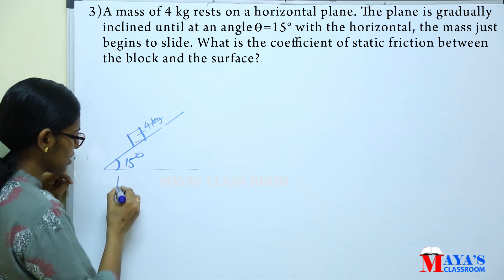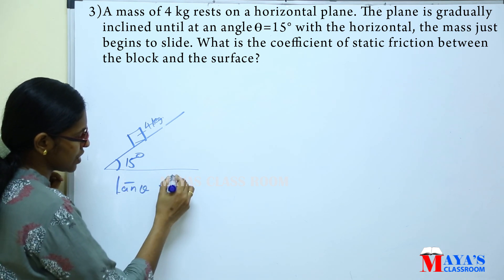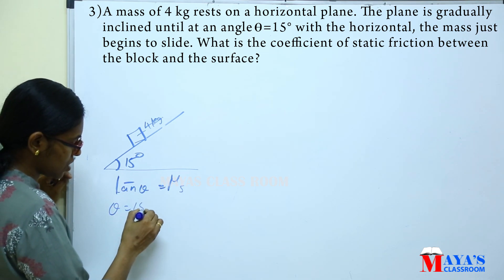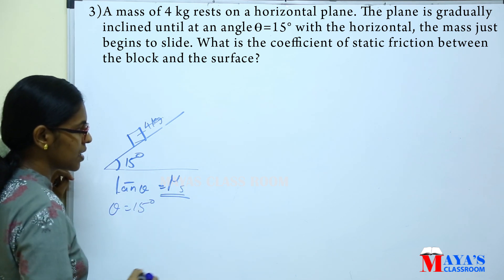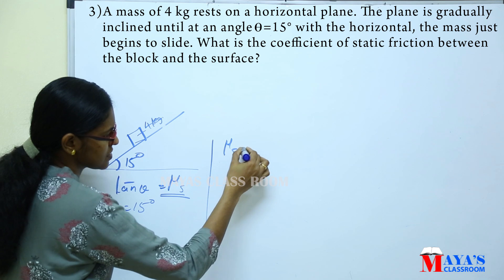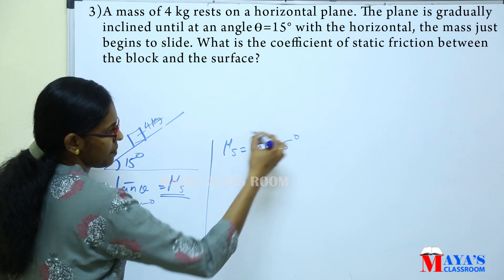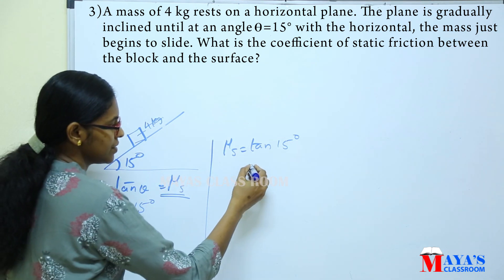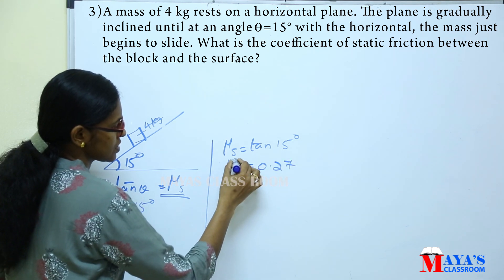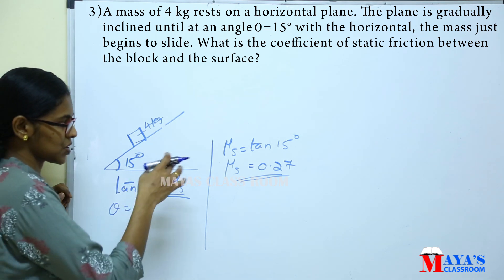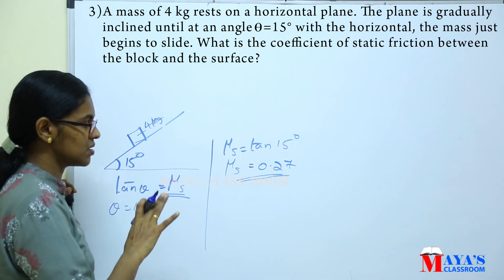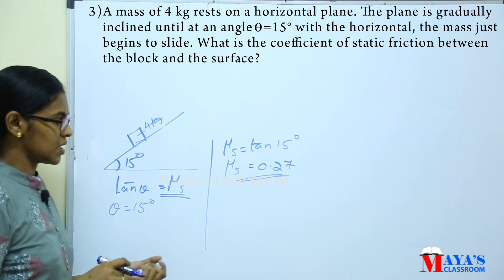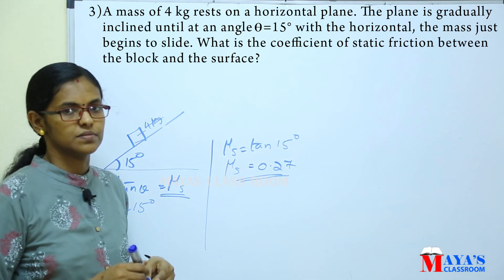Using the equation we have studied, tan(theta) = mu_s. With theta = 15 degrees, the coefficient of static friction mu_s = tan(15°) = 0.27.